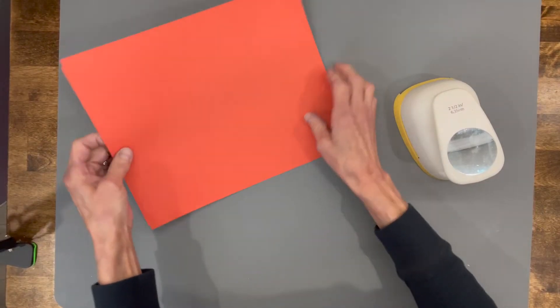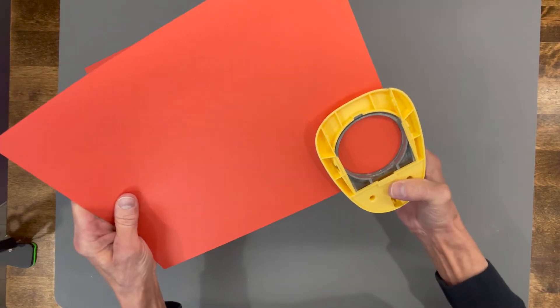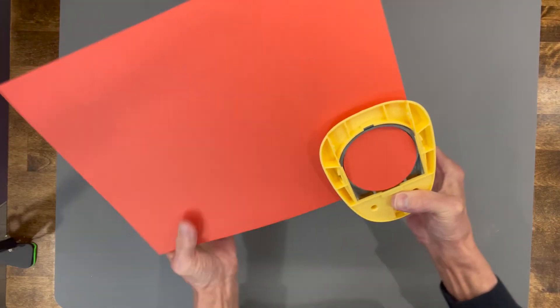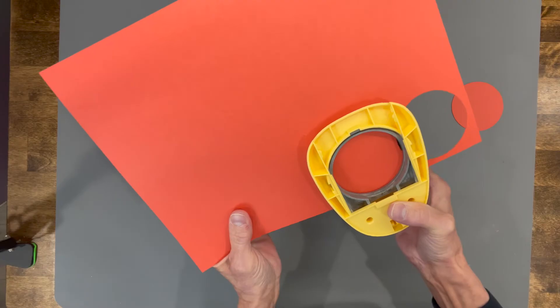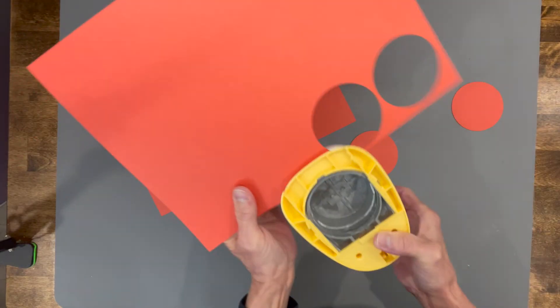Okay, for each of these pumpkins you're going to need two pieces of eight and a half by eleven cardstock and a two and a half inch punch. I'm just turning my punch over on the back so I can see and line it up because I want to make sure that I can get all 24 circles cut out of two pieces of cardstock.